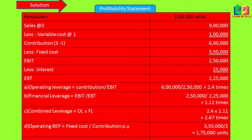Now we have to find out the operating breakeven point. The formula is fixed cost divided by contribution per unit. Here, the fixed cost is 3 lakh 50,000, divided by contribution per unit which is 3 minus 1, equal to 2 per unit. So we get 1 lakh 75,000 units as the operating breakeven point.